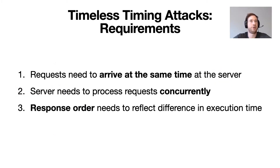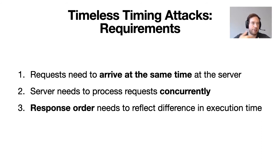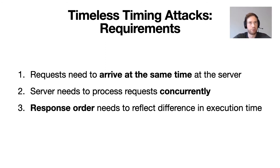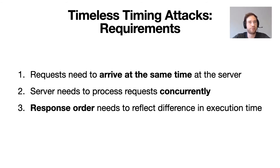In order to apply our timeless timing attacks, there are three requirements. First, we send two requests at the same time and they need to arrive at exactly the same time at the server. Second, after they arrive, they need to be processed concurrently. Third, the response order needs to reflect a difference in execution time. For modern servers, they typically already process requests concurrently, and the third requirement is typically also met because servers will typically respond as soon as possible.